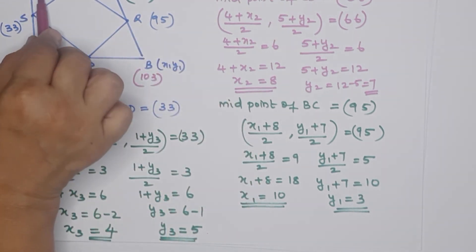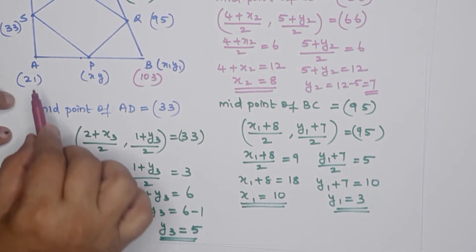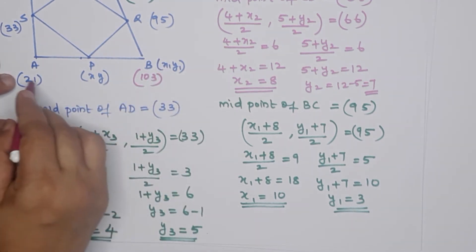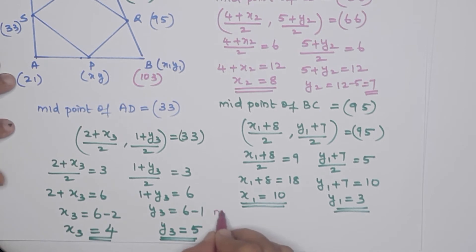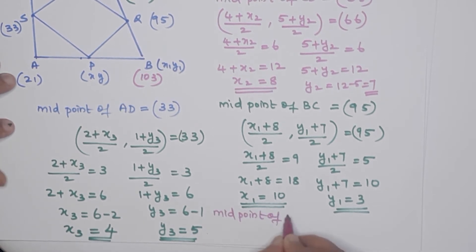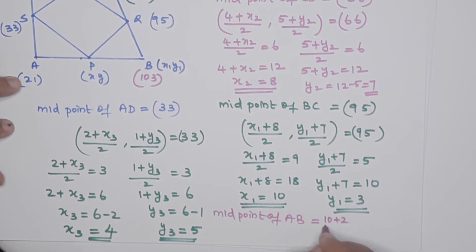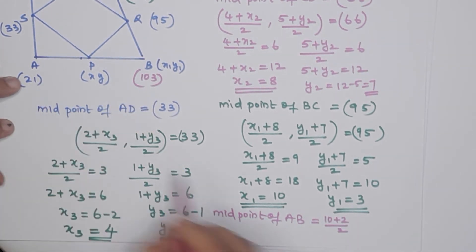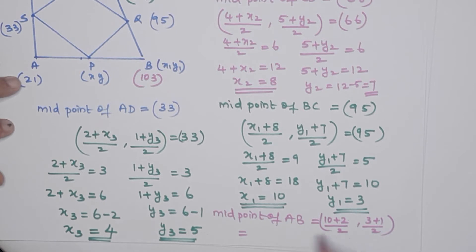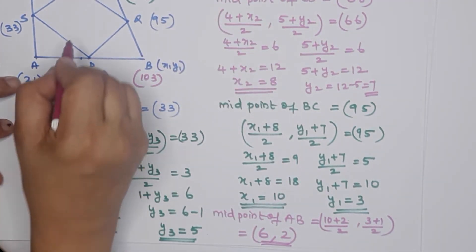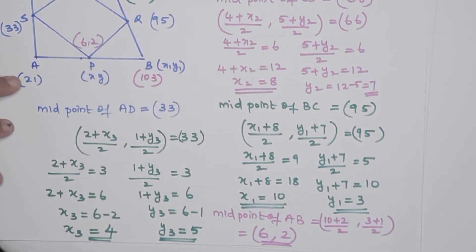So we have found: D at (4, 5), C at (8, 7), B at (10, 3). We can verify: midpoint of AB, with A at (2, 1) and B at (10, 3), equals (10 plus 2 over 2, 3 plus 1 over 2) = (12 over 2, 4 over 2) = (6, 2). This midpoint is (6, 2). Question is clear.